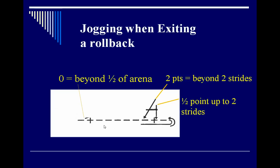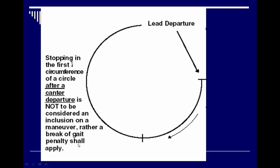When exiting a rollback — where the horse runs down, stops, and rolls back — it's a half-point penalty if he jogs up to two strides. If it's beyond two strides but before half the length of the arena, it's a two-point penalty. If it's beyond that half-arena point, he's considered off pattern and receives a score of zero.